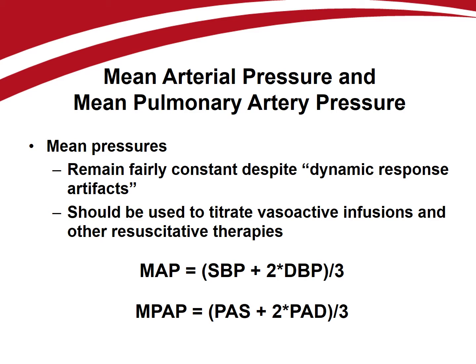Let's start with some simple hemodynamic calculations. The mean arterial pressure of the systemic circuit is calculated using both systolic and diastolic blood pressure. It averages out the dynamic response artifacts, or noise, in the systolic and diastolic measurements, and should be used to guide vasoactive infusions and other therapies, rather than using systolic or diastolic pressures alone. If you are unfamiliar with this concept, you should watch the podcast on dynamic response artifacts.